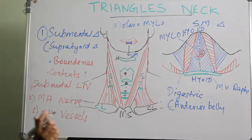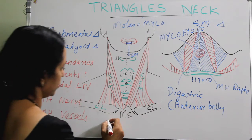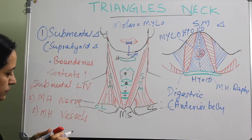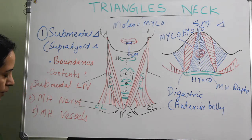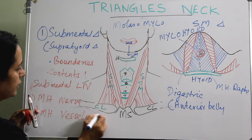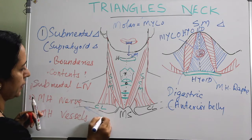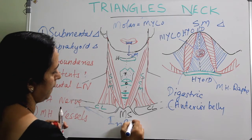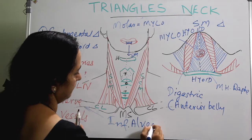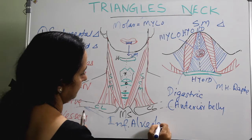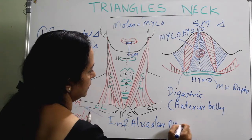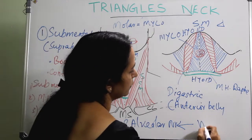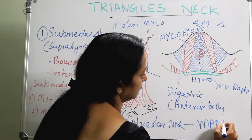So the mylohyoid nerve is a branch of the inferior alveolar nerve, which is a branch of the mandibular division of the trigeminal nerve.